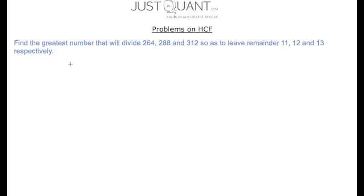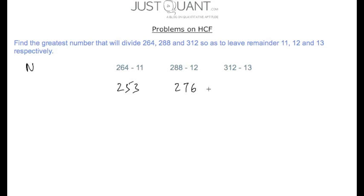In our next problem, find the greatest number that will divide 264, 288, and 312 so as to leave remainders 11, 12, and 13 respectively. If the greatest number that divides the three numbers is n, then the numbers obtained after subtracting the respective remainders are exactly divisible by n. The resulting numbers are 253, 276, and 299, and the greatest number n is the HCF of these three numbers.